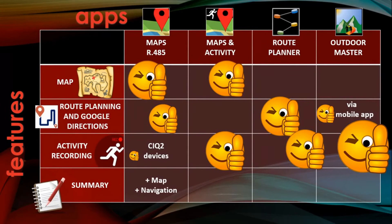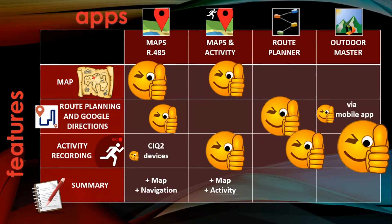Maps R485 offers the map image and navigation, but only some devices will be able to record activities with it. Maps and Activity, on the other hand, can record activities and show your track on the map, but it cannot be used for navigation.